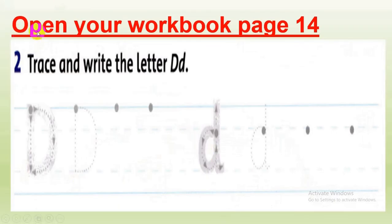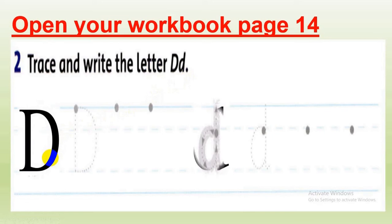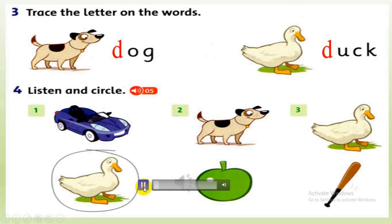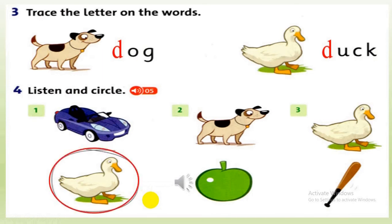Let's move. Open your workbook to page 14. Exercise 2: Trace and write the letter D. Exercise 3: Trace the letter D — Dog, Duck. Exercise 4: Listen and circle. Listening 5 — listen and circle. 1. Duck. 2. Dog. 3. Duck.